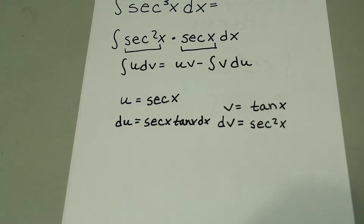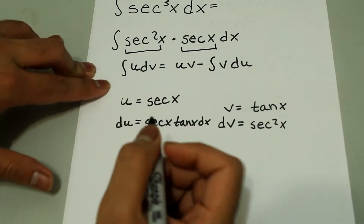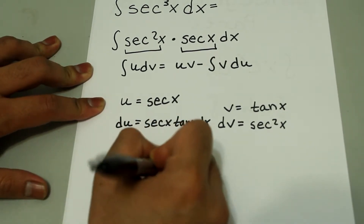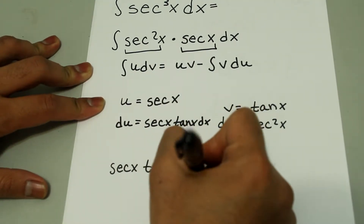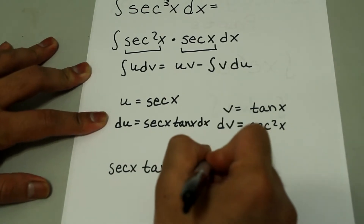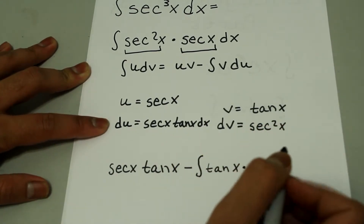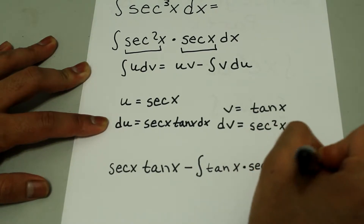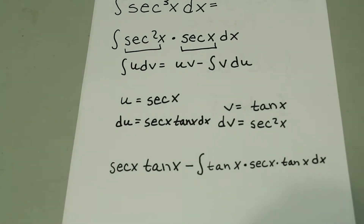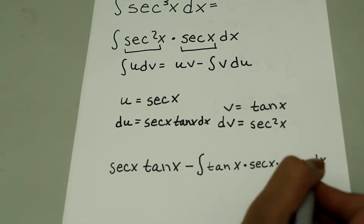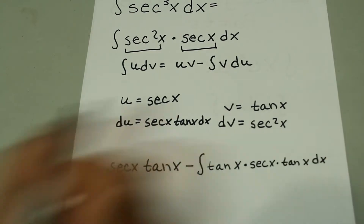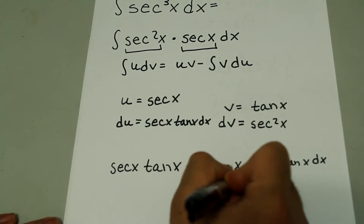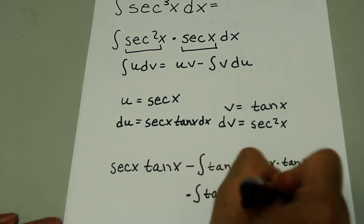So now, using this form, u times v is going to be secant x times tangent x, minus the integral of v — which is tangent x — times du, which is secant x times tangent x dx. We have two tangent x's here, so I'm going to multiply them together and write that as the integral of tangent squared x times secant x dx.